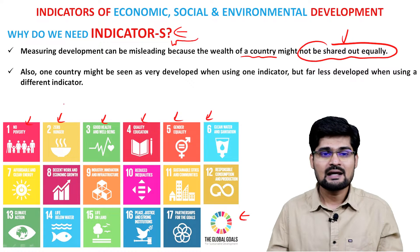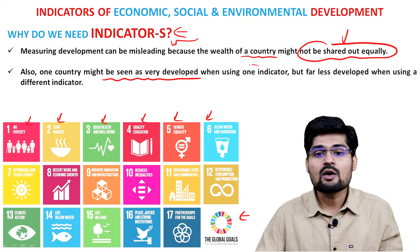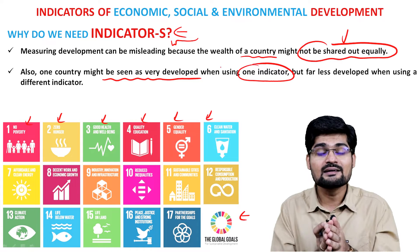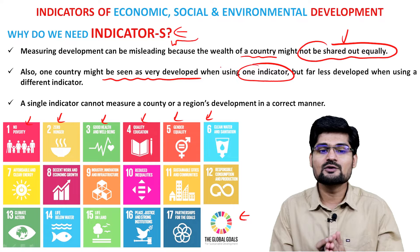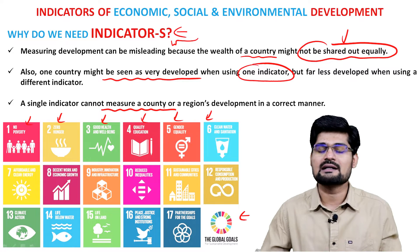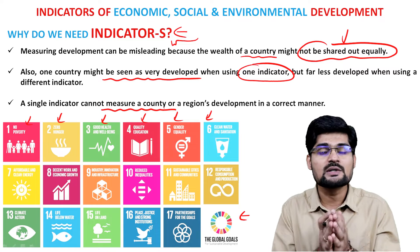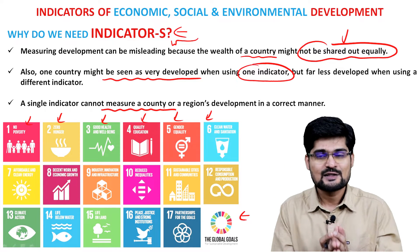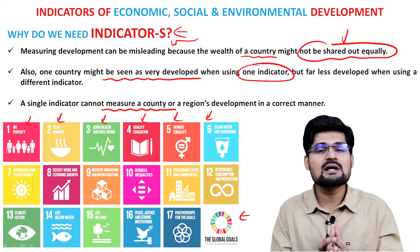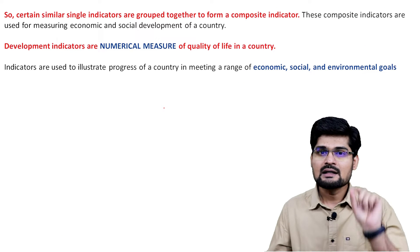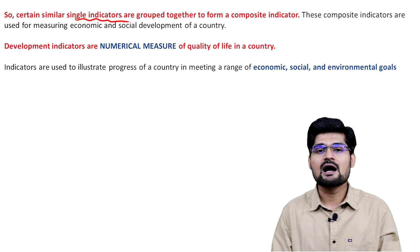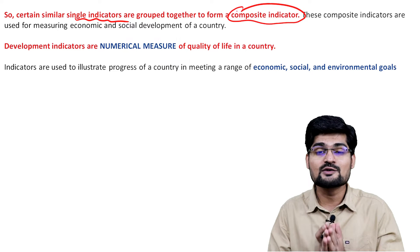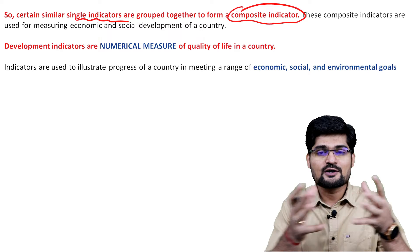One country might be seen as very developed when using only one indicator, while on other indicators it may lag. So a single indicator cannot measure a country's progress and development in a correct manner — we need composite indices. Similar single indicators are grouped together to form composite indicators, and many composite indicators are used in today's world to describe developmental levels across the world.